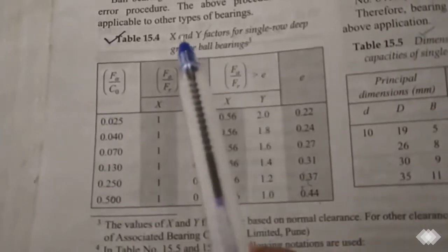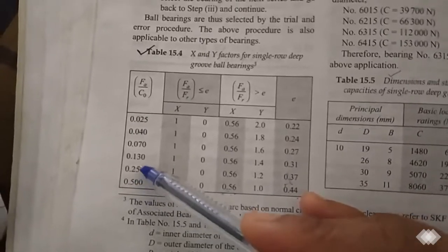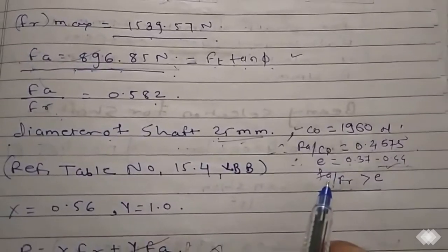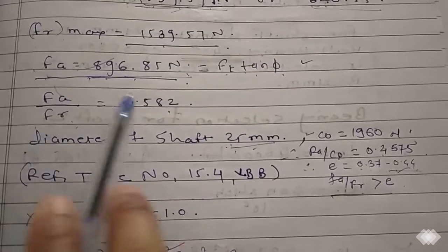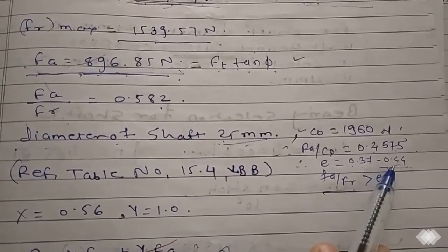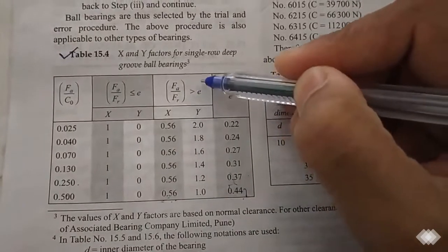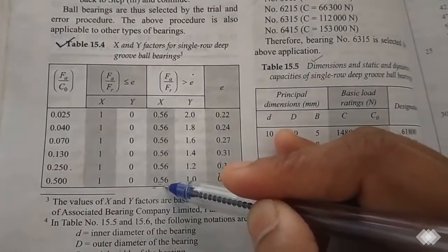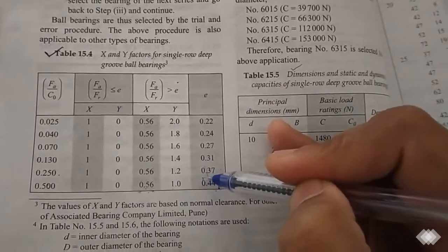From the table we find the FA upon C0 ratio, and our value is 0.45. It lies between two values in the table, so the value of e lies between 0.37 and 0.44. Since FA upon FR is 0.58, which is greater than e even at its maximum value, we select X and Y from the column where FA upon FR is greater than e. So X equals 0.56 and Y equals 1.0.